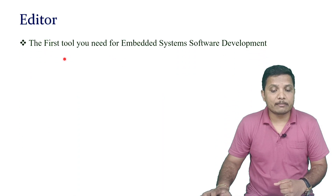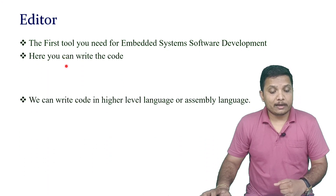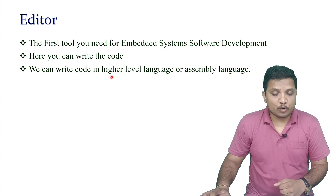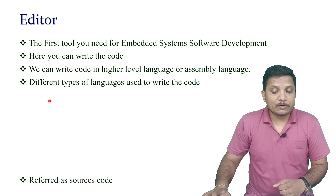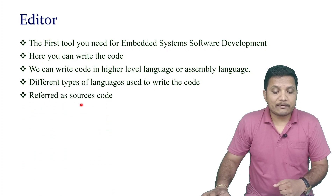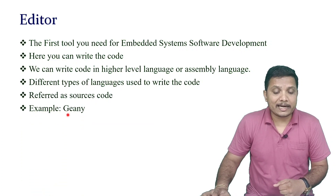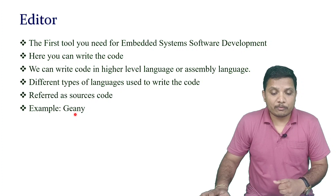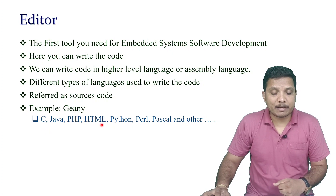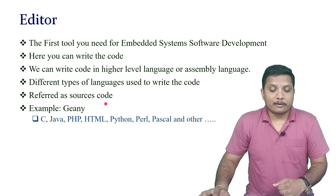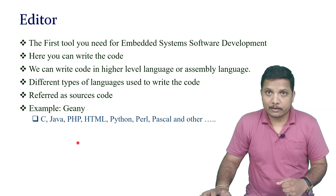The first tool is the editor, used to write a program in embedded systems. We can write programs in two ways: in a higher level language or in assembly language. Different types of languages can be used, and the code written is referred to as source code. For example, a GUI editor can be used, supporting many languages like C, Java, PHP, HTML, Python, Perl, Pascal, and others.